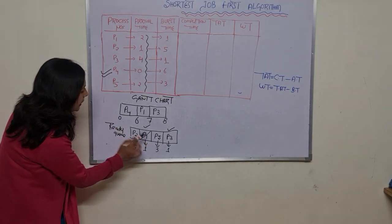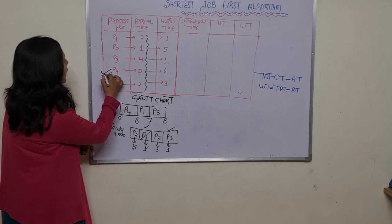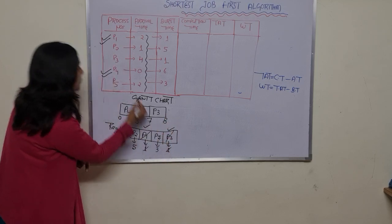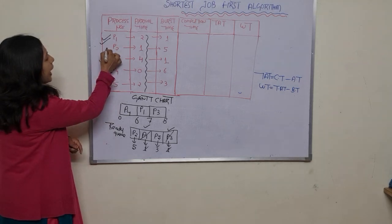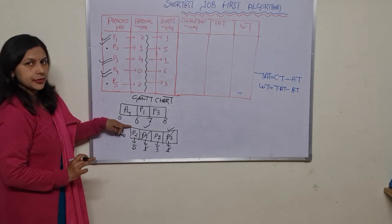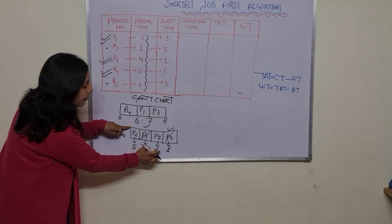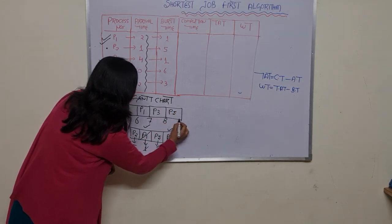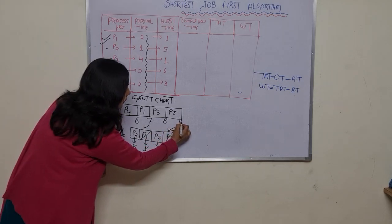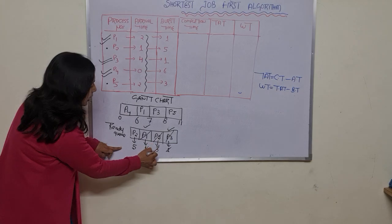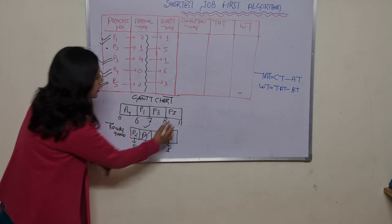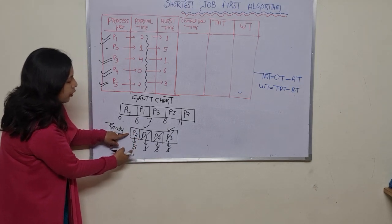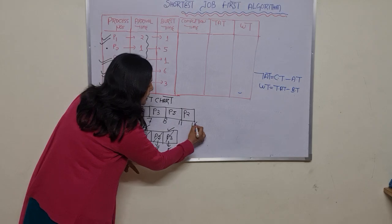So far, P4, P1, and P3 have been executed. Now only P2 and P5 are left. P5 has a shorter burst time (3) than P2 (5), so P5 executes next from 8 to 11. Finally, P2 is the only remaining process and executes from 11 to 16. The Gantt chart is now complete: P4(0–6), P1(6–7), P3(7–8), P5(8–11), P2(11–16).